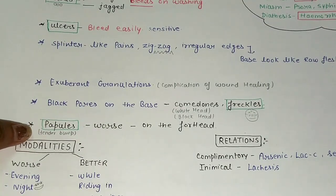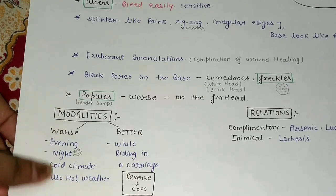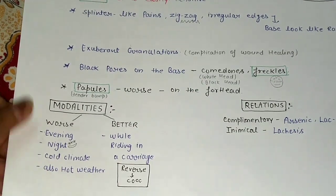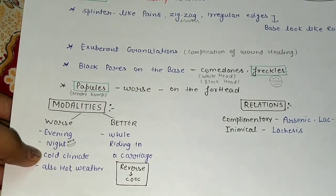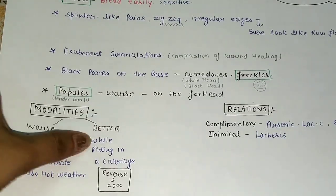After that I will discuss modalities of Nitric Acid. General modalities - worse in evening, night, cold climate, and also hot weather. Better in riding in a carriage. This is the reverse of Cocculus.